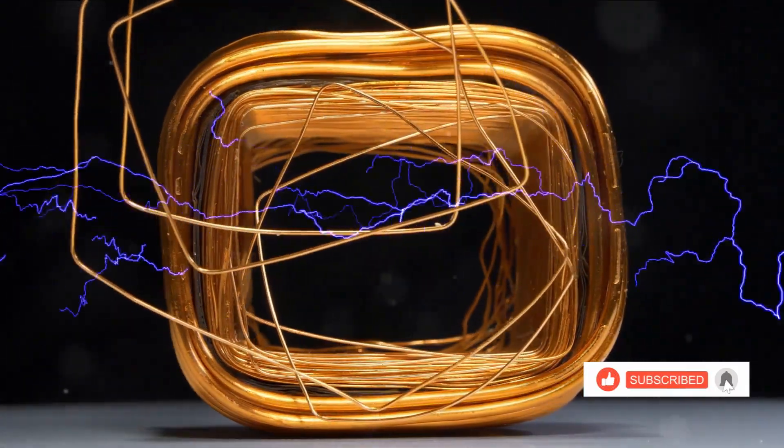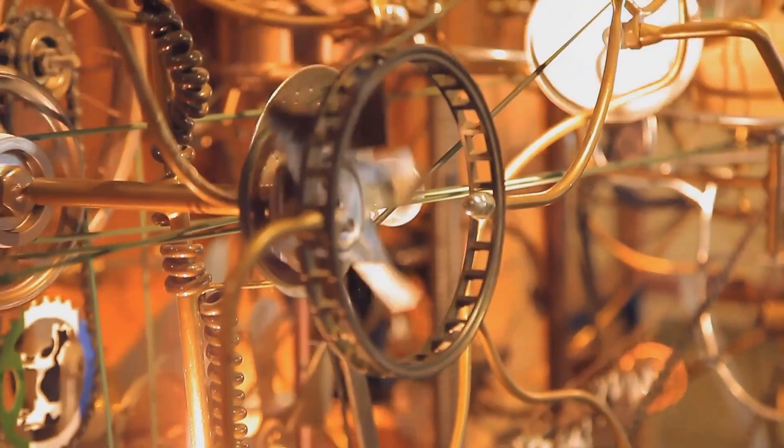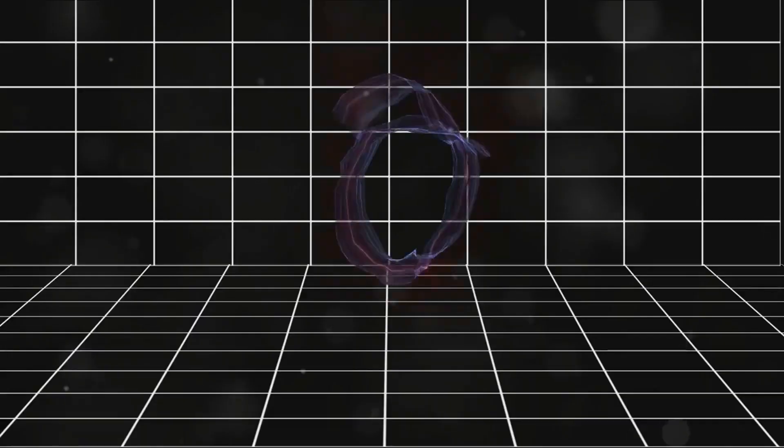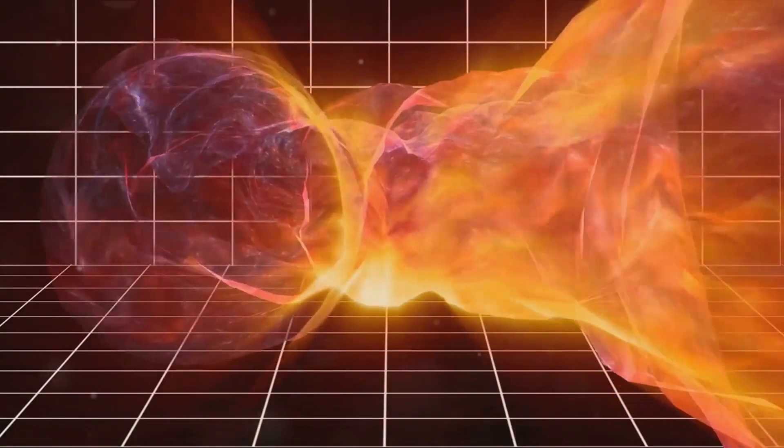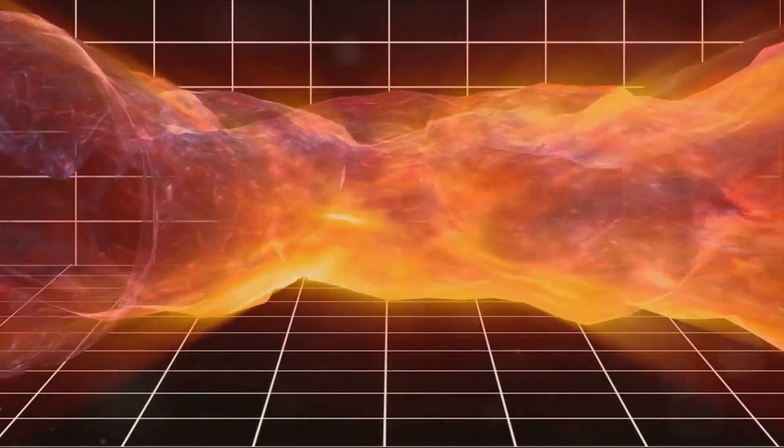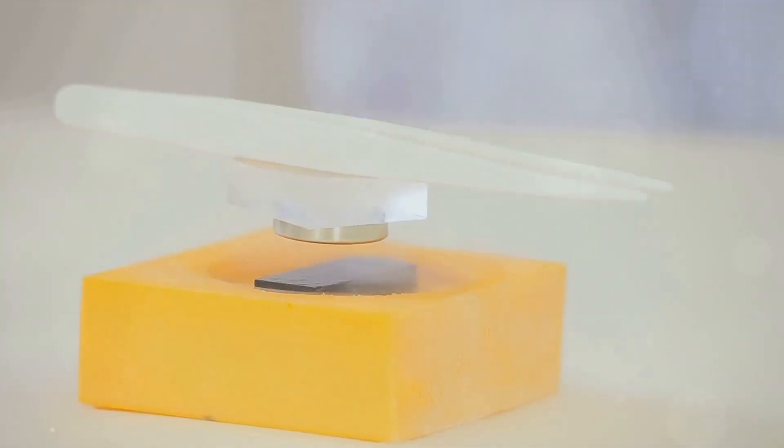Now let's move on to type 2 superconductors. These are usually complex materials like ceramic alloys, and they have a higher critical temperature than type 1 superconductors. Interestingly, type 2 superconductors allow some magnetic fields to penetrate through them, resulting in a mixed state of superconductivity and magnetism. It's like they have an invisible shield, letting in just the right amount of magnetic field.